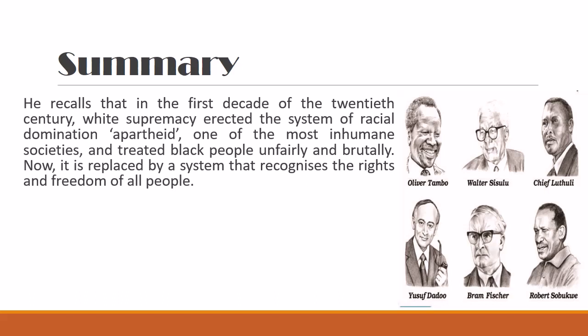He recalls that in the first decade of the 20th century — from 1900 to 1910 — white supremacy erected the British government and created the system of racial domination, apartheid. In this system, it was one of the most inhumane societies because black people were treated unfairly and brutally, sometimes beaten to death, given no rights. Now it is replaced by a new fair system — a democratic government that recognizes the rights and freedom of all people, regardless of their race, color of skin, or religion.